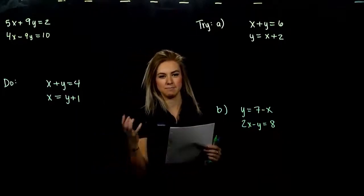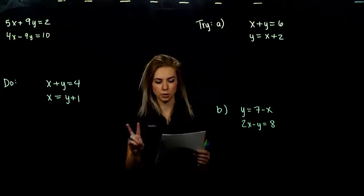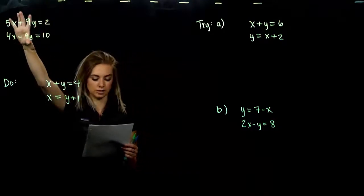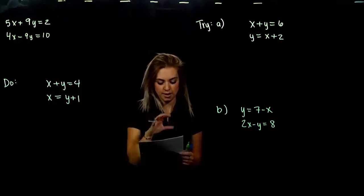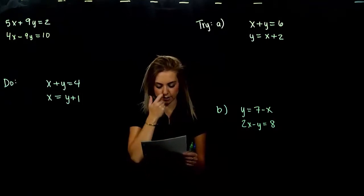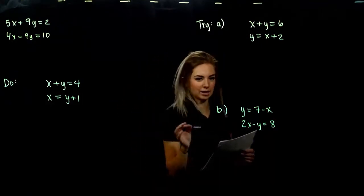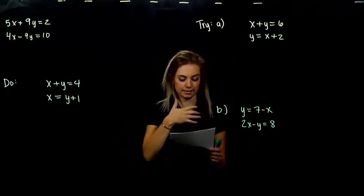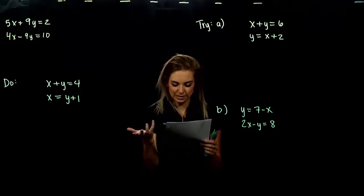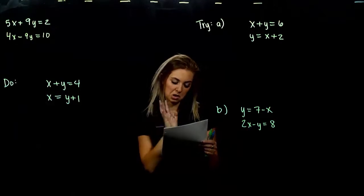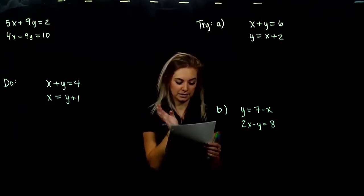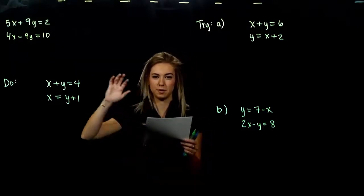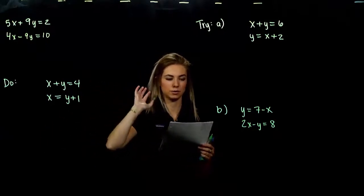Yesterday we looked at graphing as a means of solving a system of two equations with two variables. Looking at this first example, when we try to solve this system graphically, we have a picture of those two lines and we can see their intersection, but we're not quite sure exactly where that's occurring. We have a good idea it's in the fourth quadrant, so we have a positive x and a negative y, but we can't be very accurate.